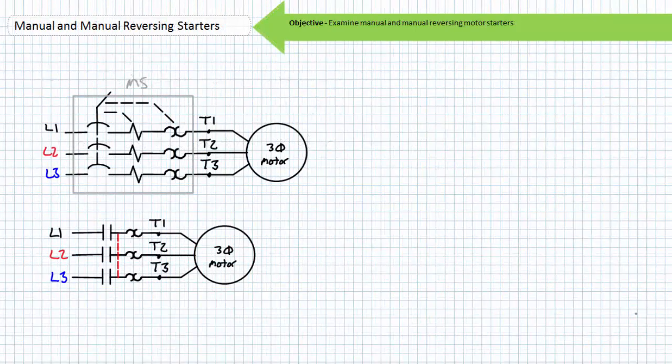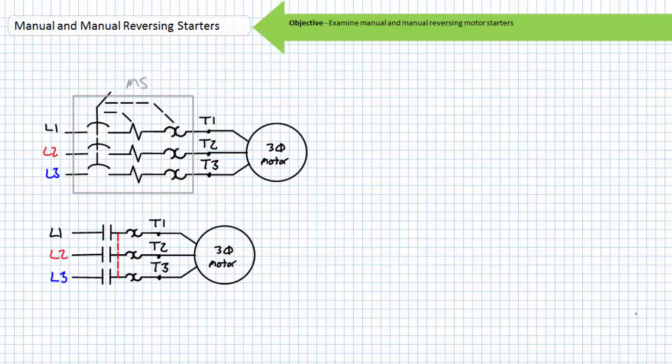Note the schematic symbol for a manual motor starter includes both the symbols for a circuit breaker and an overload. Sometimes you may see additional detection mechanisms internal to the manual motor starter if they include instantaneous overcurrent protection. For example, this manual motor starter includes contacts that are manually, magnetically, and thermally actuated.